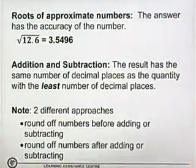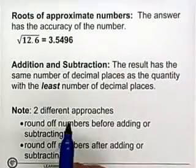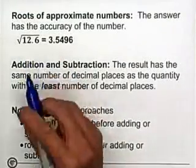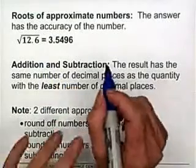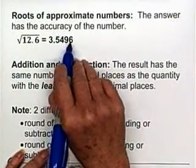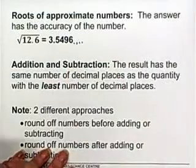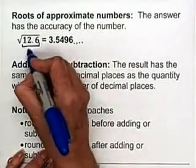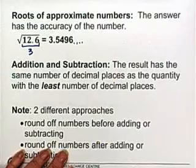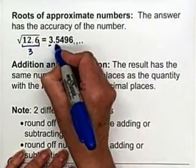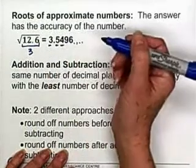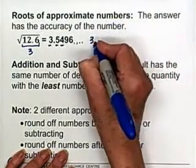If you're taking the root of an approximate number, your answer has to have the accuracy of the number under the root sign. It doesn't matter whether it's a square root or a cube root — it applies in any situation. When I calculated this, I got an answer of 3.5496, and this number just went on and on. However, I'm only allowed 3 sig figs, because that's the number of significant figures in the original number. So: 3's good, 5's good, but this 4 has to be changed to a 5 because it's followed by the 9. So my answer is 3.55.